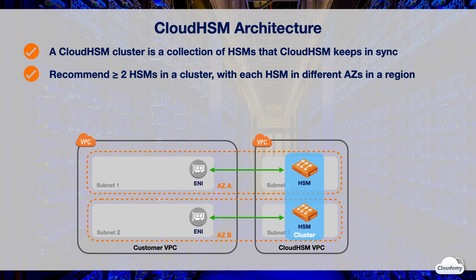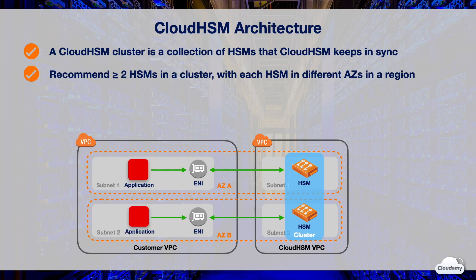When you create an HSM, Cloud HSM puts an Elastic Network Interface or ENI in the specified subnet in your AWS account. HSM ENI is the interface for interacting with the HSM. HSM resides in a separate VPC in an AWS account owned by Cloud HSM. HSM and the corresponding ENI are in the same availability zone. To interact with HSMs in a cluster, you need to install the client software on EC2 instances. The client instances reside in the same VPC as HSM ENIs, and each client instance communicates with the individual HSM through the ENI.